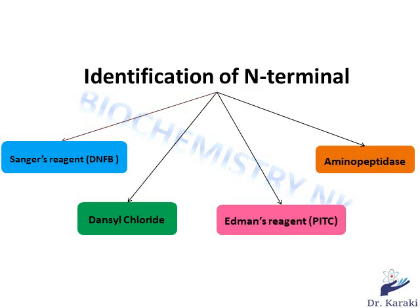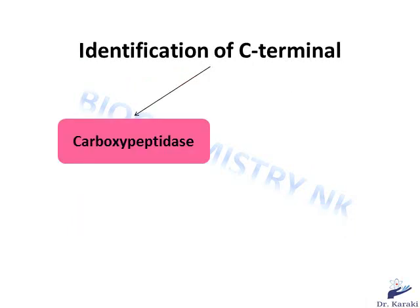Or we can use Edman's method using the Edman reagent, phenylisothiocyanate (PITC). These reagents react with the N-terminal residue and yield a chromophore or fluorescent product indicating the N-terminal residue. Alternatively, we can use an enzymatic method by choosing aminopeptidase — exopeptidases that cleave the N-terminal amino acid residue from a polypeptide chain — with different types having different specificities.